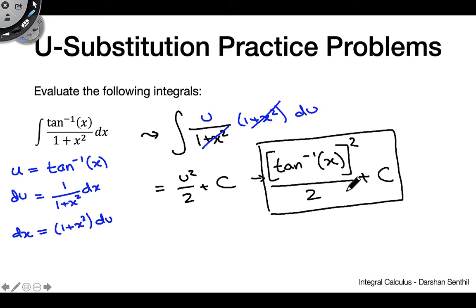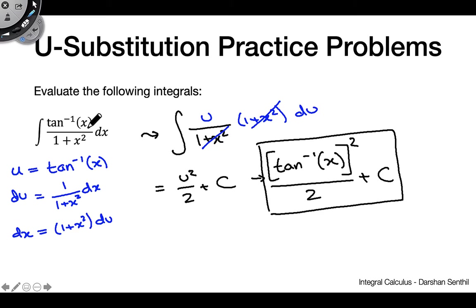The key idea here is that when you set u equal to arctan x and go through the steps, you can see the nice cancellation. Being able to see that in advance is very helpful — it not only helps you find the correct substitution, but also helps you eliminate incorrect ones. For instance, choosing u equals 1 plus x squared would not be great because nothing would cancel with the 2x that comes out.